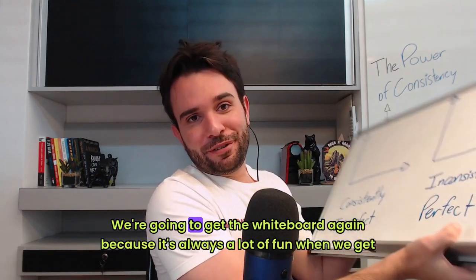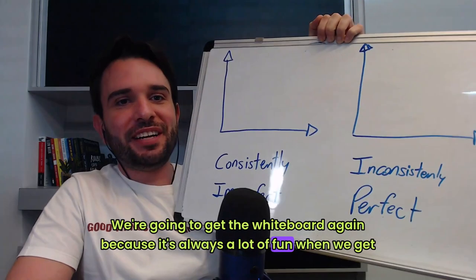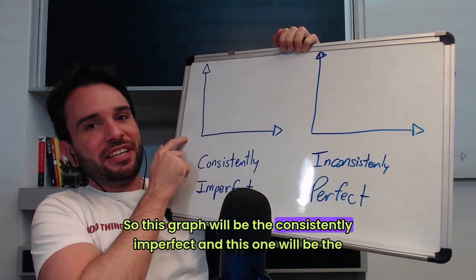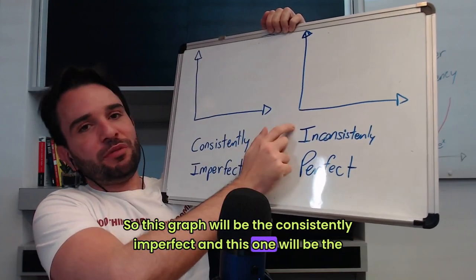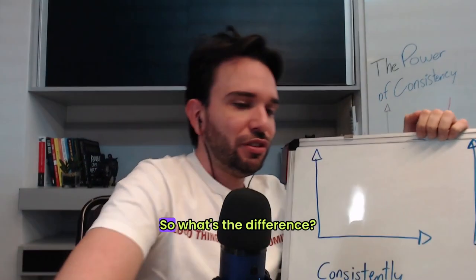So we're going to get the whiteboard again because it's always a lot of fun when we get up the whiteboard. So this graph will be the consistently imperfect and this one will be the inconsistently perfect.